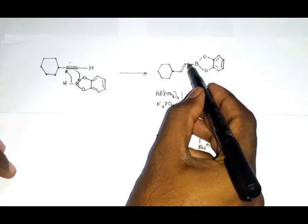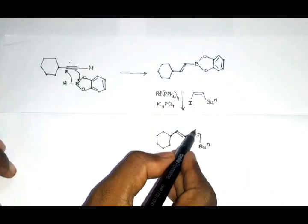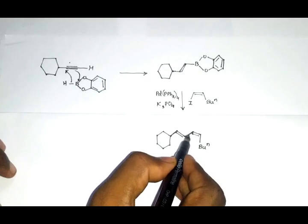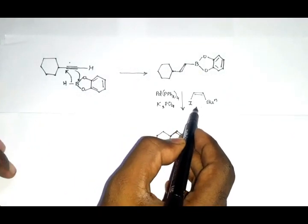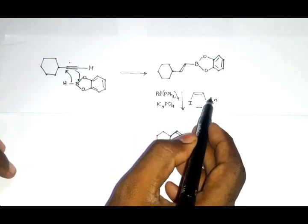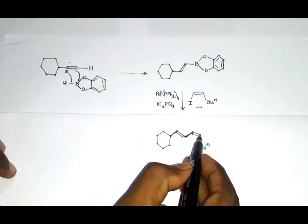In this case the trans bond was available, but if you look at this part, we have a cis bond over here because if you look at this reactant it is cis. So here we have trans and here we have cis.